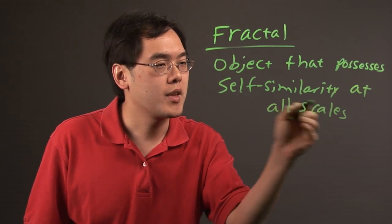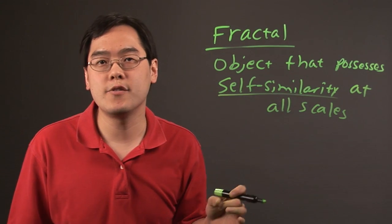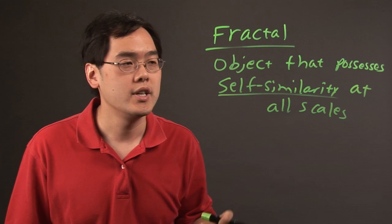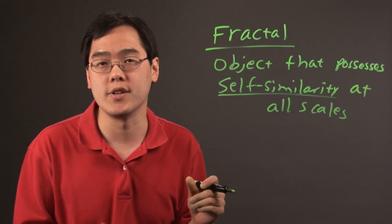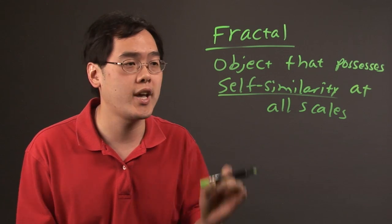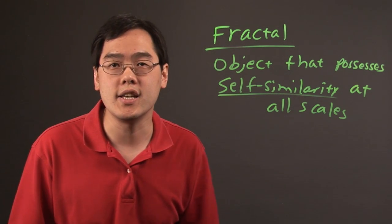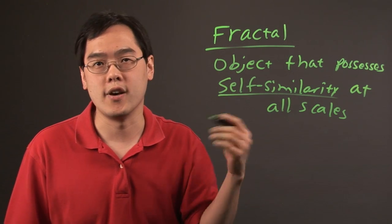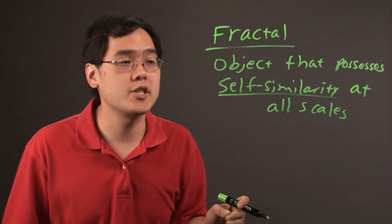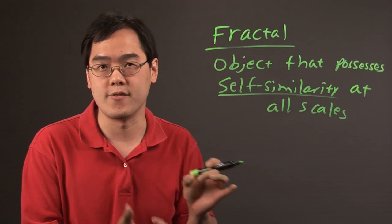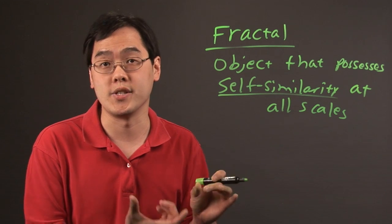Now, self-similarity means that an object looks like itself at different scales. So, for example, if you have a snowflake, if you look at a snowflake up close, you might see different representations of the same snowflake. Or if you look at something from far away, you get to see different scales of the same object. If you're talking about a snowflake, for example. So, self-similarity simply means that an object looks like itself at different points of view, if you will.